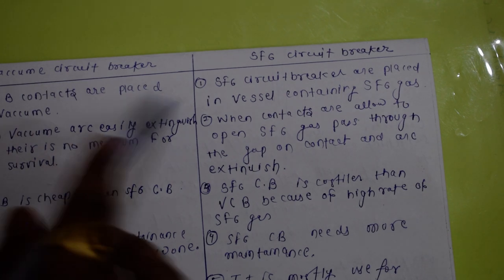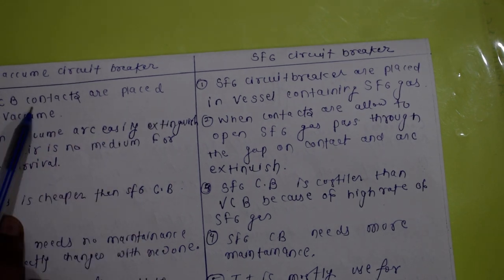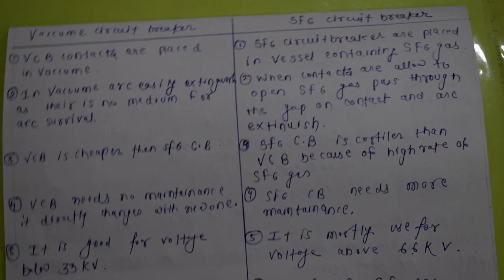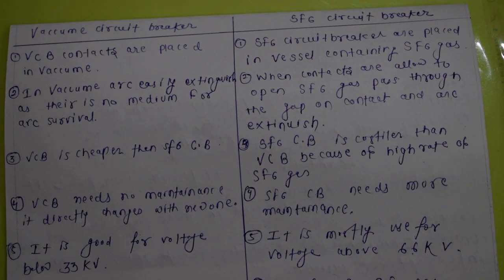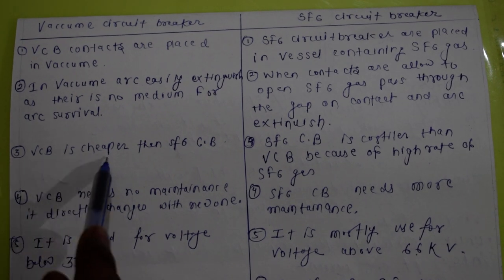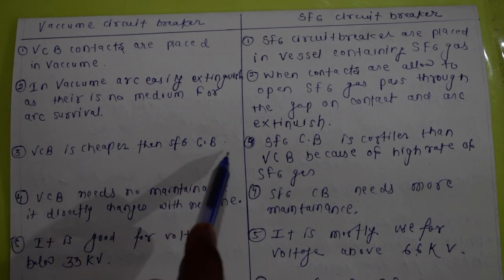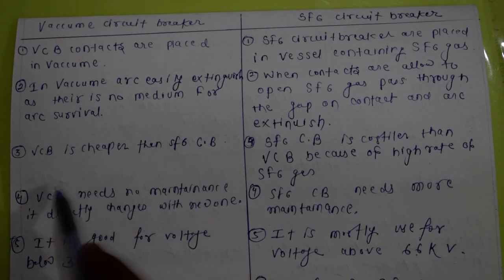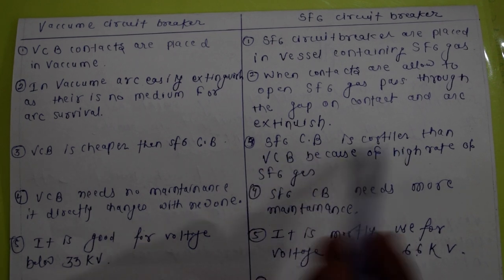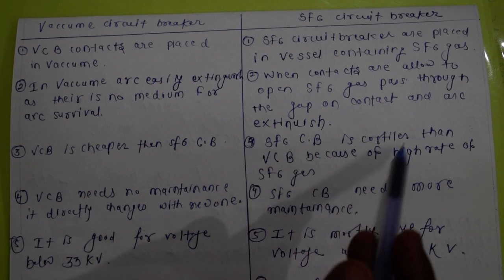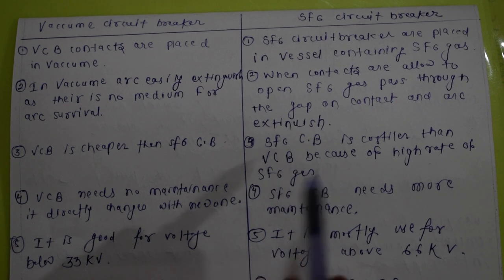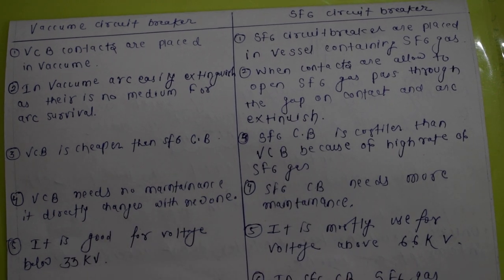So in summary: SF6 gas is used in the SF6 circuit breaker and vacuum is used in the vacuum circuit breaker. Now the third point — the vacuum circuit breaker is cheaper than the SF6 circuit breaker, because the cost of SF6 gas is very high.